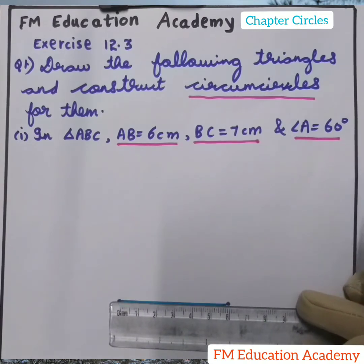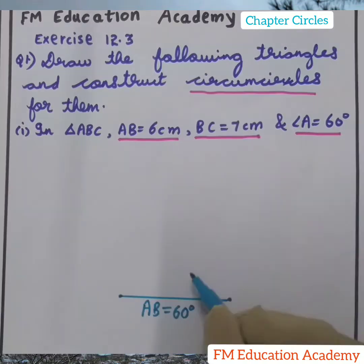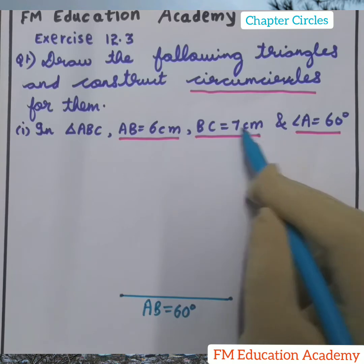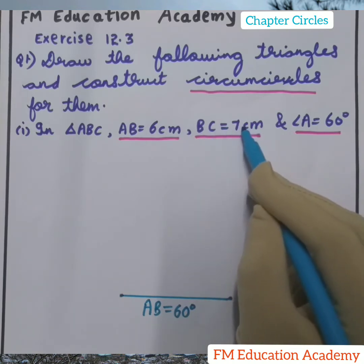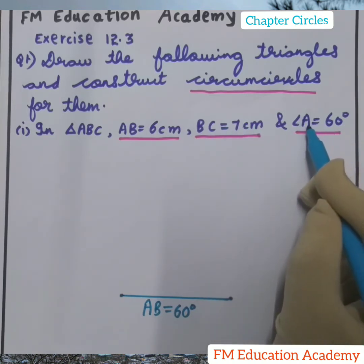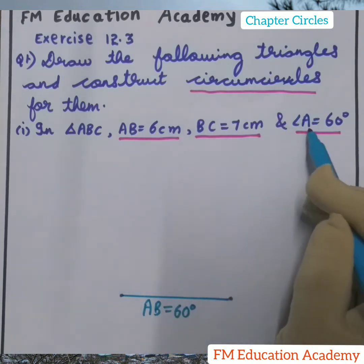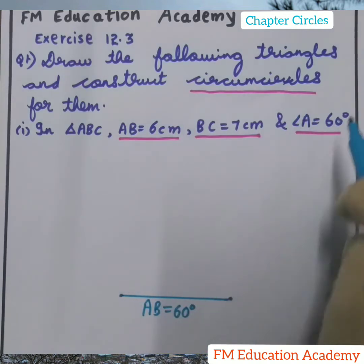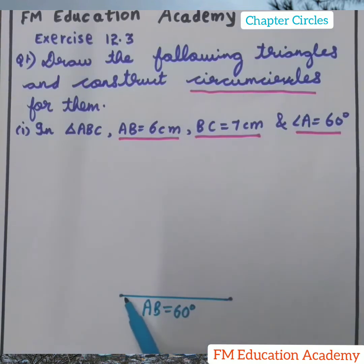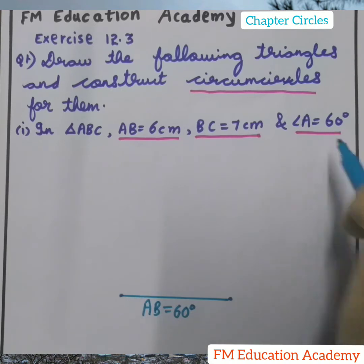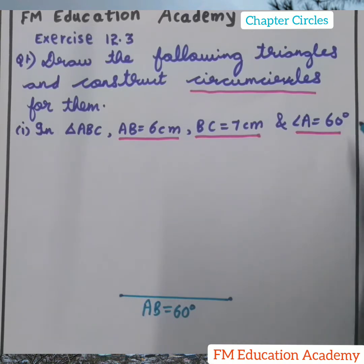BC is equal to 7 cm. But before taking BC, another data with respect to A is given. With A, one side was given and one angle is given. So I will mark angle A here. Angle A is 60 degrees. Let us construct that 60 degrees with a compass.